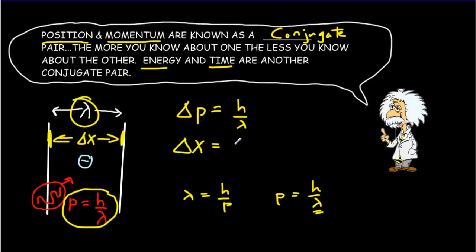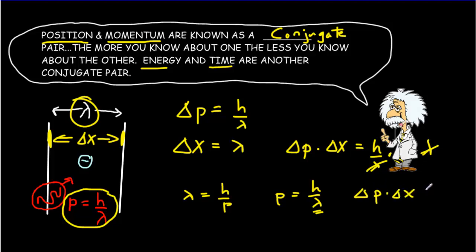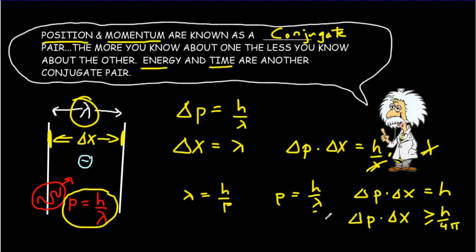Delta x is going to be equal to lambda itself. If I multiply delta p and delta x together, I get h over lambda times lambda — the lambdas cancel and I get delta p times delta x equal to h. This has been an ad hoc calculation; if you do a more mathematical version, you get h divided by 4 pi. So the uncertainty in momentum times the uncertainty in position, at best with the very best equipment, must be greater than h over 4 pi. The larger delta p is, the smaller delta x is, and vice versa — the better you know the momentum, the less you know about the location.